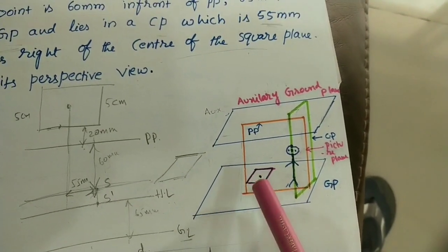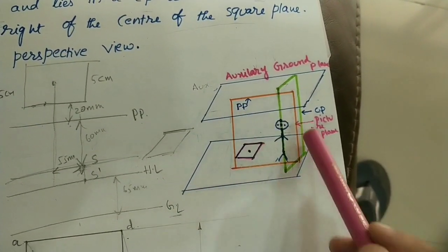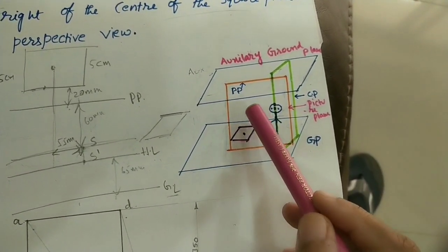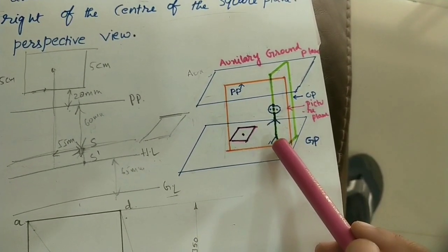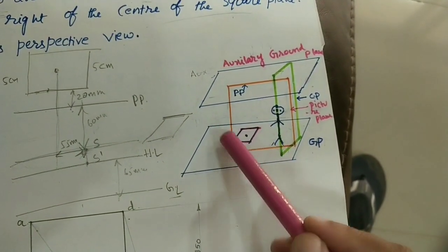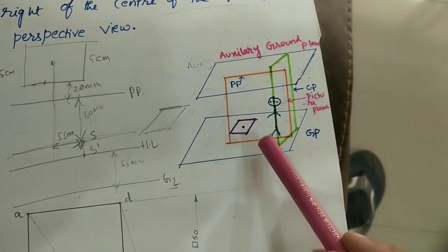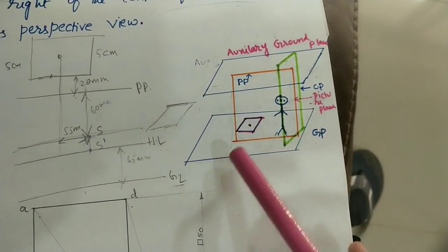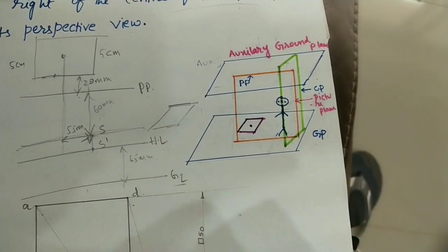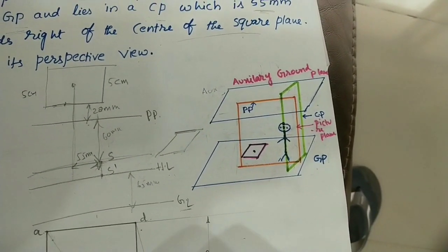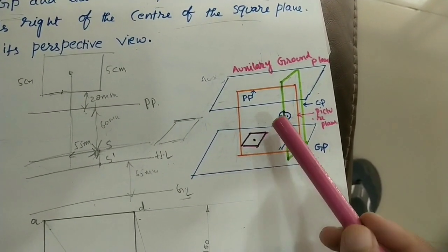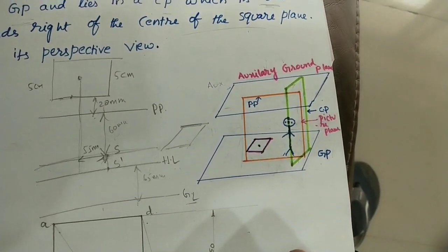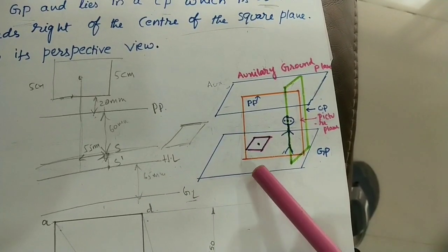On the GP, the square plane is there. One more plane — PP — is called the picture plane. This picture plane is in front of the observer, who is standing on the ground plane. This picture plane is perpendicular to the horizontal plane or GP — the angle between the vertical plane and horizontal plane is 90 degrees, perpendicular to each other. The observer is standing in front of the picture plane on the ground plane.